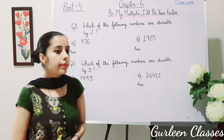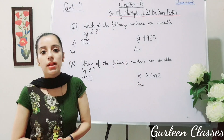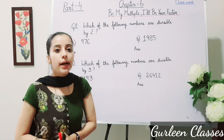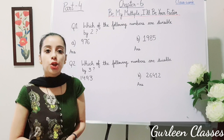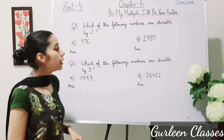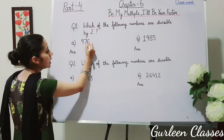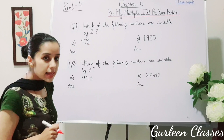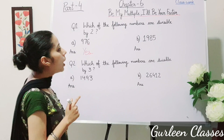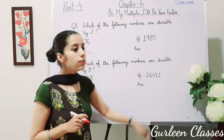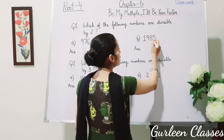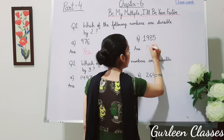Question number 1: Which of the following numbers are divisible by 2? Part A: 976. For divisibility by 2, the digit in the ones place should be 2, 4, 6, 8, or 0. The ones digit here is 6, which is even, so yes, 976 is divisible by 2. Part B: 1985. The ones digit is 5, which is not even, so no, 1985 is not divisible by 2.